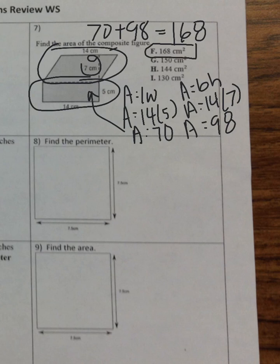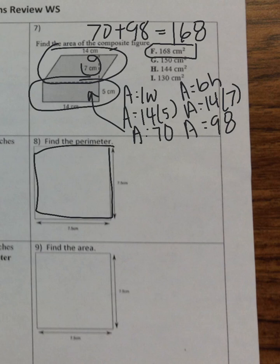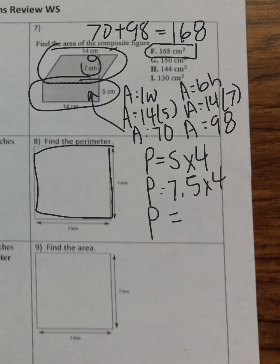Number eight: find the perimeter of a square. Perimeter is the distance around the outside; for a square all sides are the same, so it's side times 4. Seven point five times 4 gives me 30 centimeters.